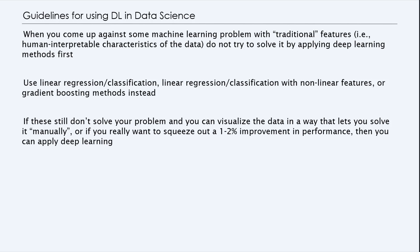So what are the guidelines for using deep learning in data science? When you come up against some machine learning problem with traditional features, for example, human interpretable characteristics of the data, do not try to solve it by applying deep learning methods first. For example, predicting housing prices using characteristics of housing, which is very important or easy for humans to interpret. So let's go with a simple linear or logistic regression model to do so. You must use linear regression or classification with nonlinear features or linear features or some level of gradient boosting methods to solve that.